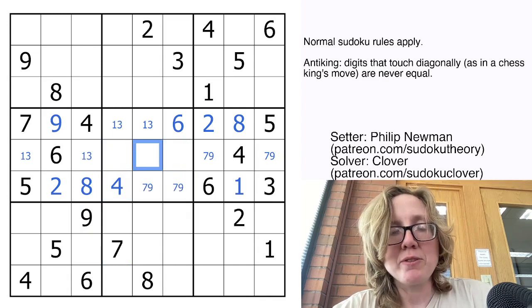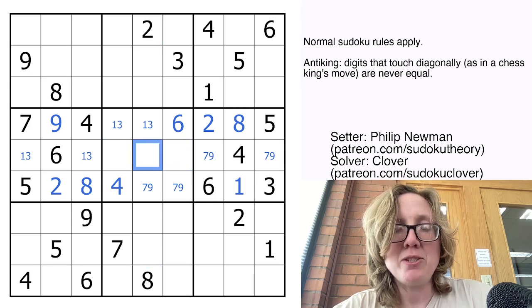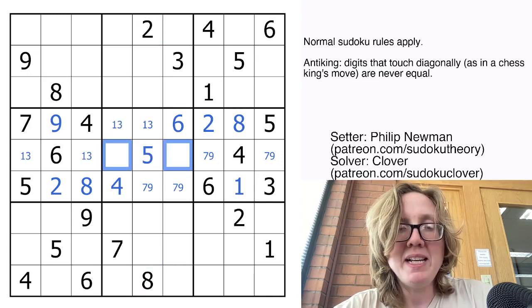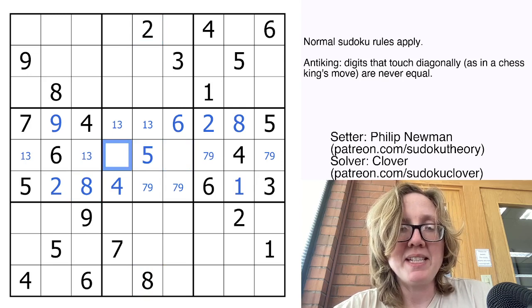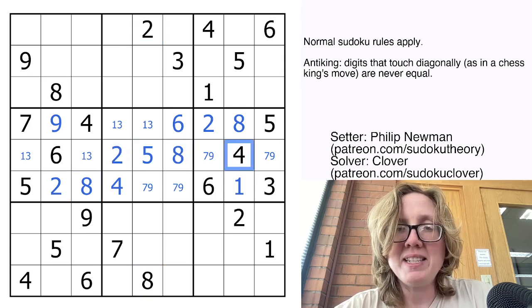My three remaining digits for the region will be 2, 5, and 8. This one cannot be 2 or 8, so it is a 5. And then the anti-king rule tells me that this cell is not an 8, so that's my 2 and this is my 8.